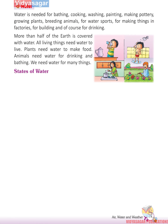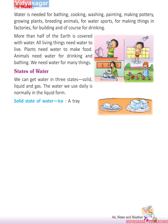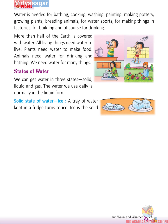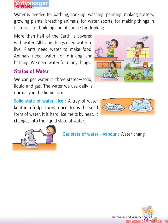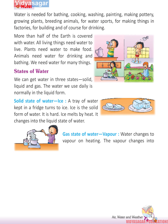States of Water: We can get water in three states — solid, liquid, and gas. The water we use daily is normally in liquid form. A tray of water kept in a fridge turns to ice. Ice is the solid form of water; it is hard, and melts by heat, changing into liquid water. Water also changes to vapor on heating. The vapor changes into liquid again after striking a cold surface.